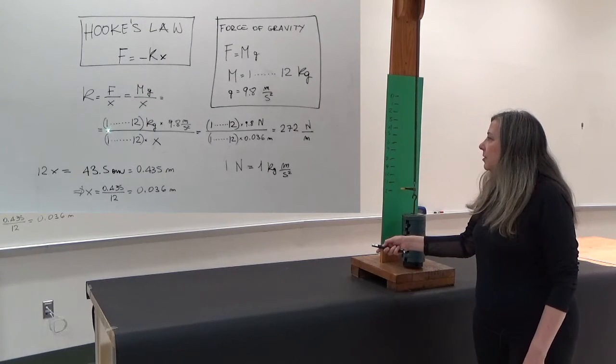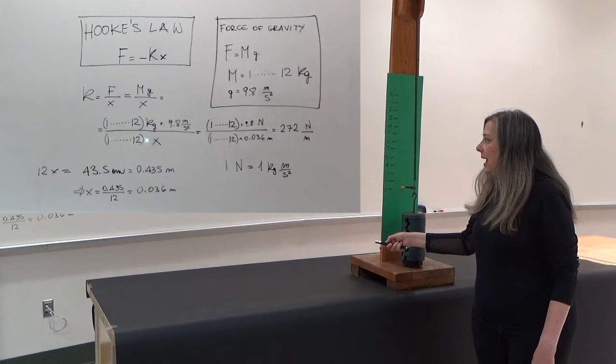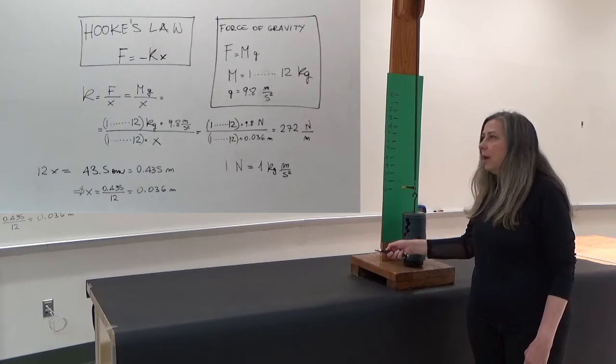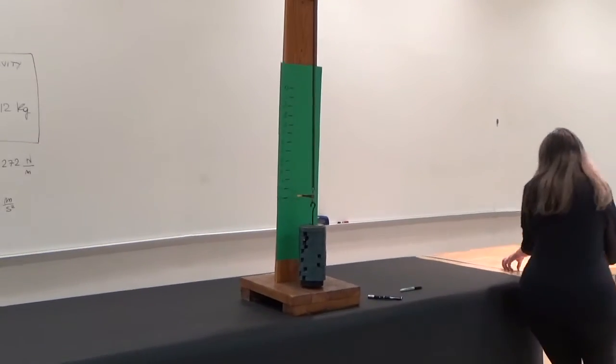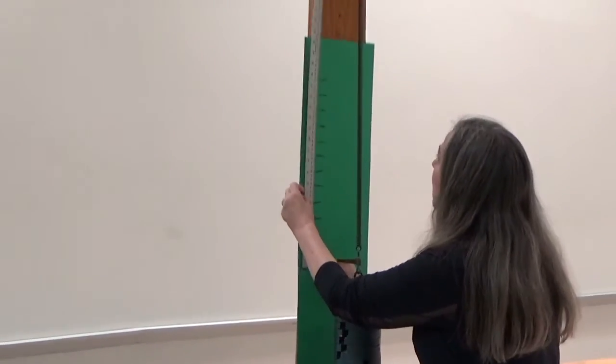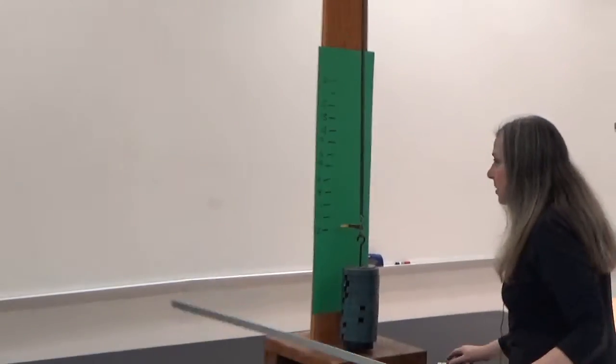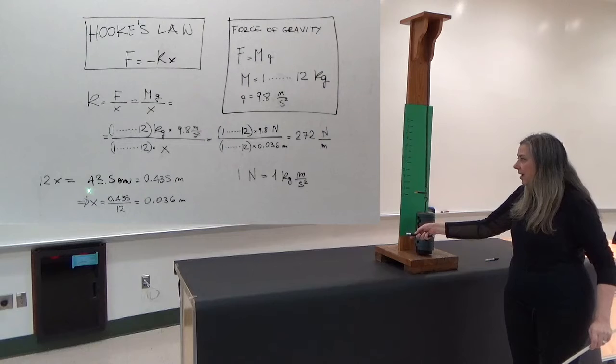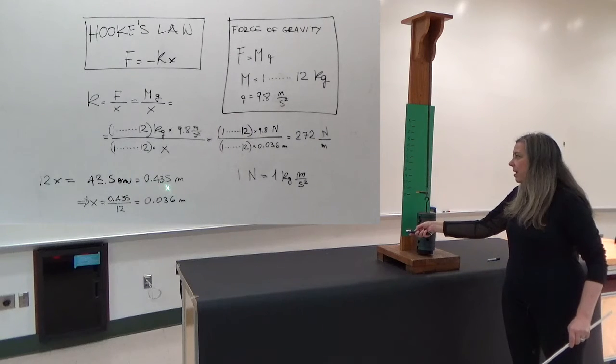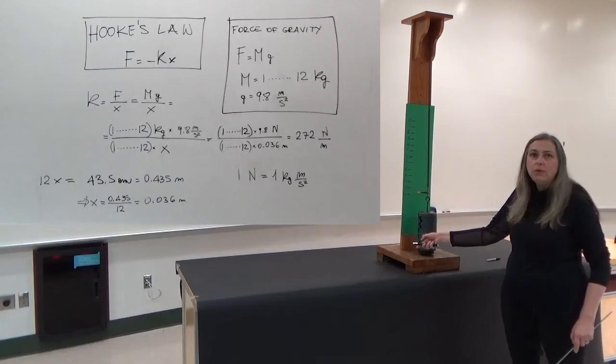m varies from 1 to 12 kilograms, multiplied by the acceleration of gravity, and x, the displacement, varies between 1 times x and 12 times x. So let's measure what 12 times x is. If I start from 12 down here and go up to 0, I get a measurement that's precisely 43 and a half centimeters. So 12 times x is 43.5 centimeters, that is 0.435 meters, therefore x is that number divided by 12 which is 0.036 meters.